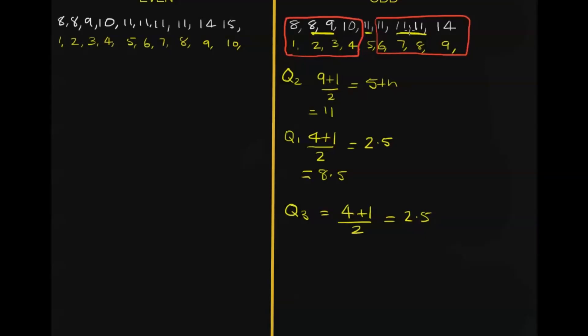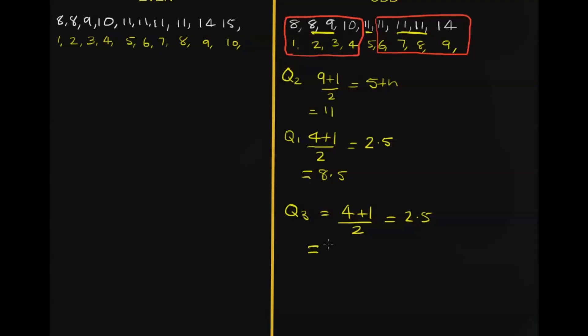So we take a half of, so we add 11, 11 together, find the middle. So the median is going to be, not the median, sorry, the upper quartile is going to be 11.